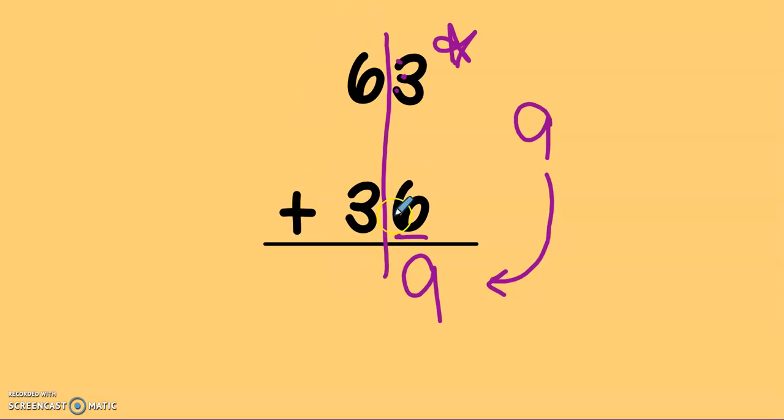Now, I go to the tens column. 6, 7, 8, 9. Again. So, 63 plus 36 is equal to 99.